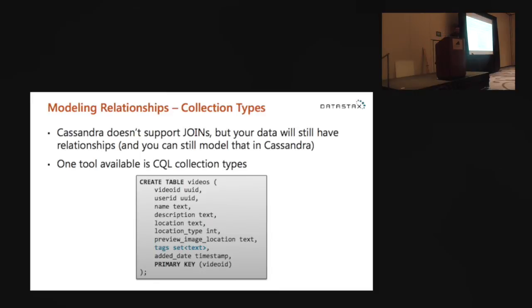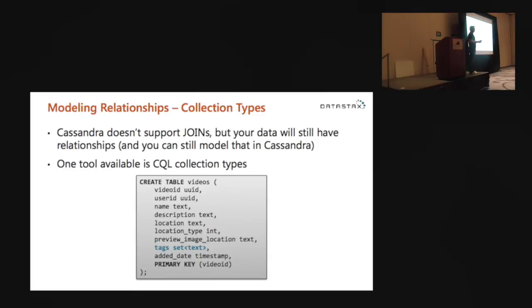Let's talk about modeling relationships. There are two examples I want to give. First: CQL collection types. When videos get uploaded to the site, users tag them with keywords — a small collection of tags. If you have a small collection of related things — and small is the keyword here — CQL collections can be a really nice way to model that. A good example of something that is NOT a small collection would be comments on a video — the number of comments might get very large over time, so that's probably not a good use case for CQL collections.